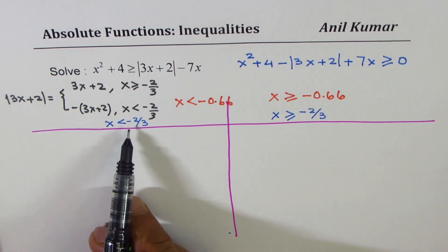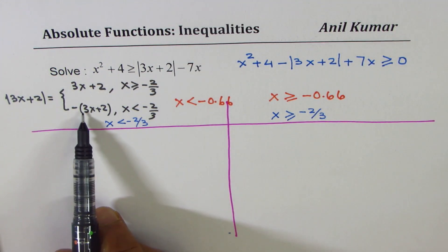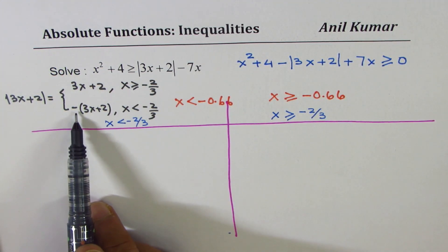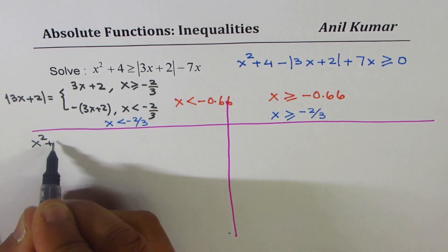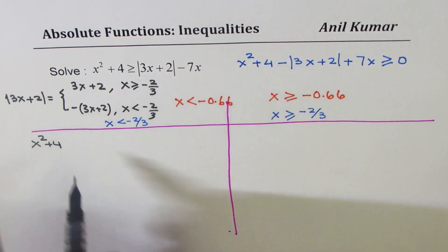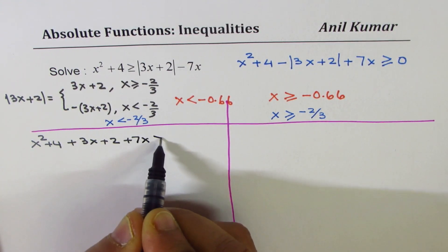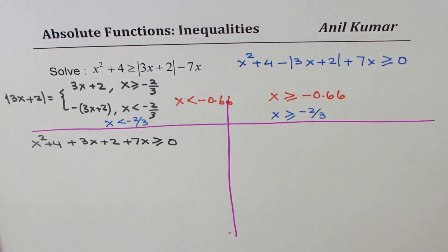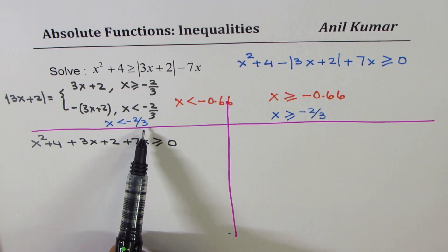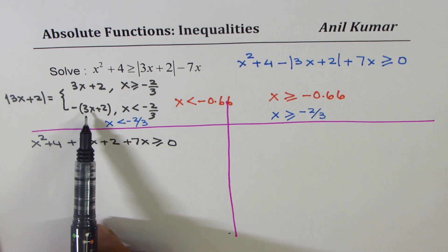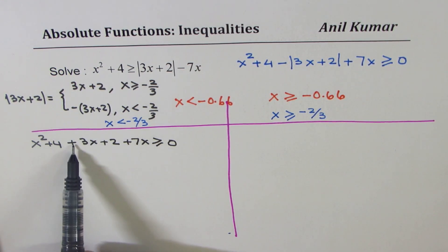For the domain where x is less than −2/3, the absolute value is replaced with the negative branch. The inequality becomes: x² + 4 — and negative of negative (3x + 2) makes it positive — plus 3x + 2 + 7x ≥ 0. Since we are working for x < −2/3, we use the negative branch of the absolute function: negative of (3x + 2), which makes it positive.